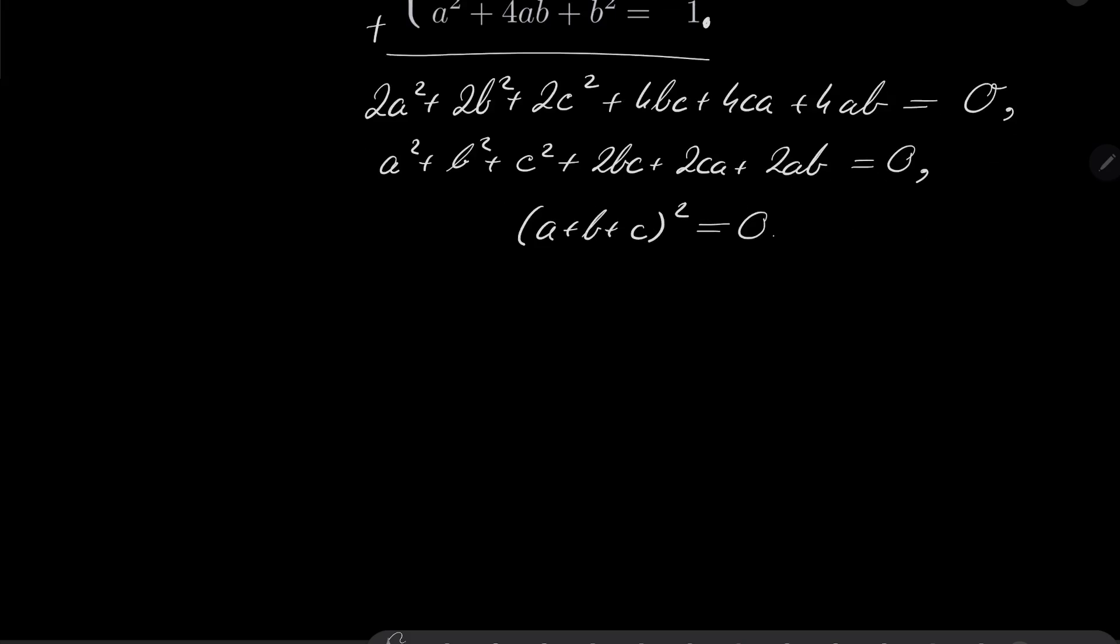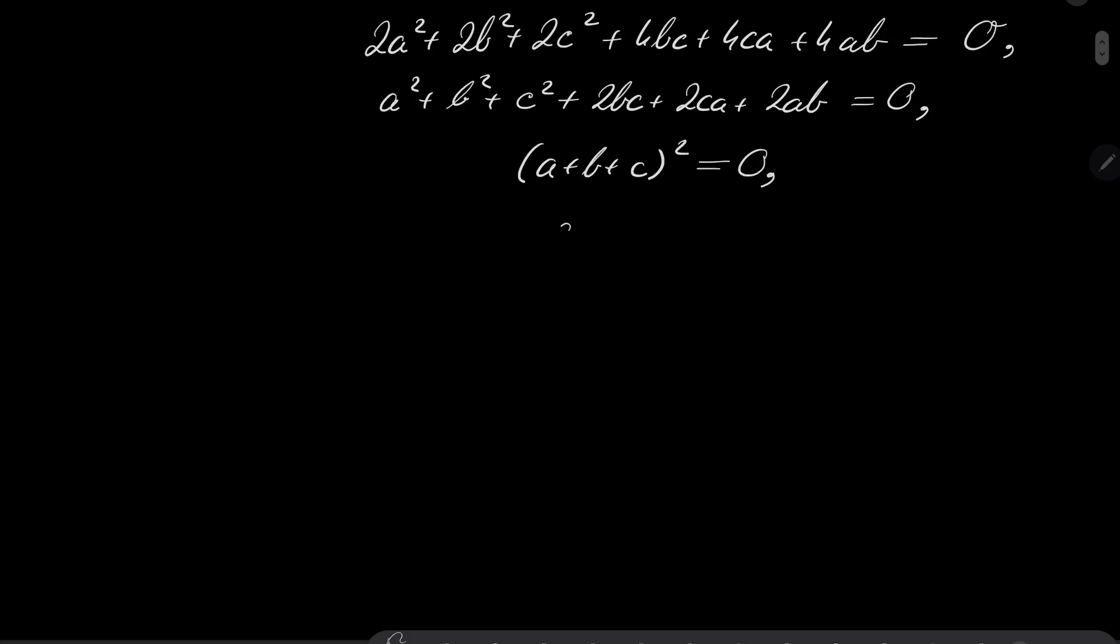2ab equals 0 and now this entire expression on the left-hand side can be reduced to (a + b + c)² = 0. So after taking square root, a + b + c = 0 and we get that b = -a - c.